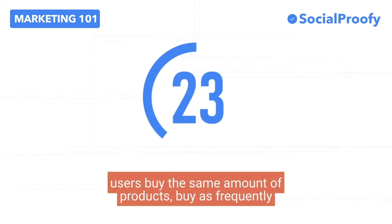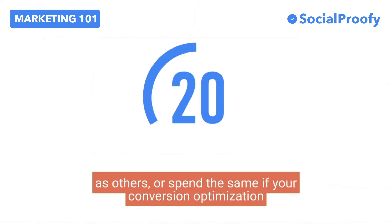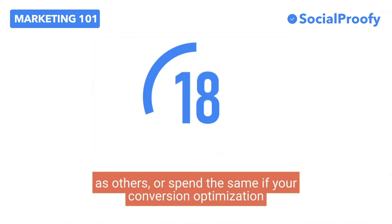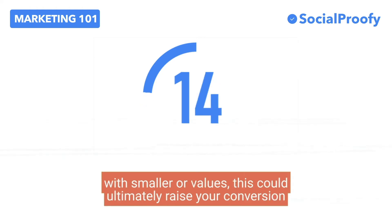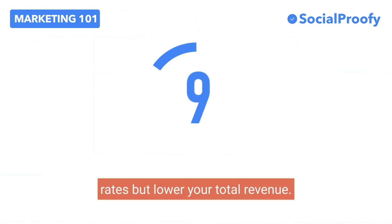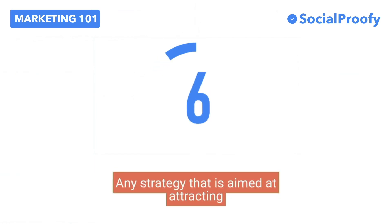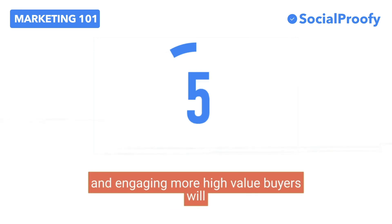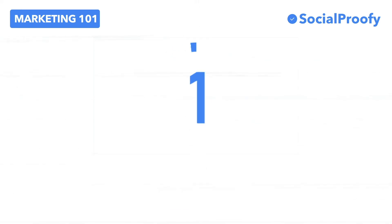Users don't buy as frequently as others or spend the same. If your conversion optimization strategy is tailored toward a large number of users but with smaller order values, this could ultimately raise your conversion rates but lower your total revenue. Any strategy that is aimed at attracting and engaging more high-value buyers will help you increase average revenue per user.